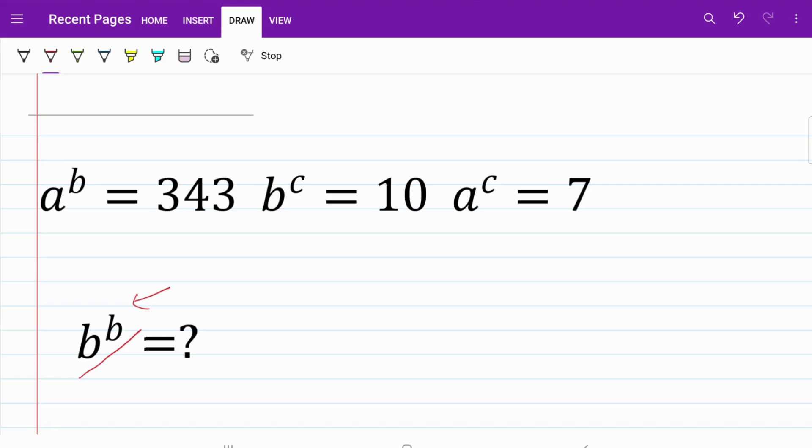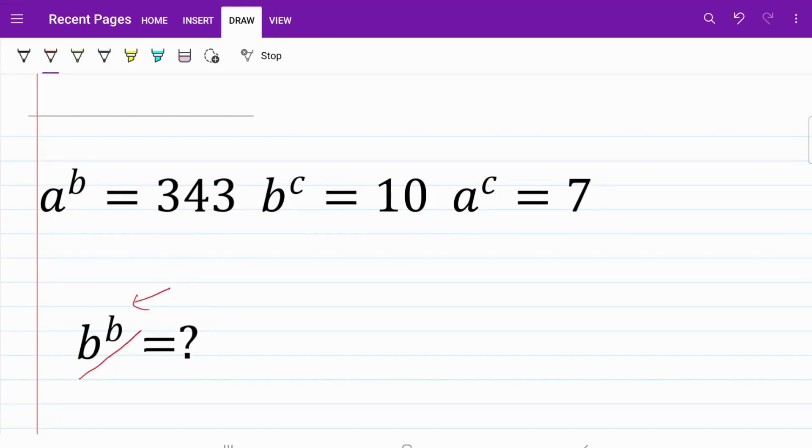In any event, let's go ahead and get started. The first thing that we're going to do is to take a look at 343, 10 and 7 and to find a way to link these numbers together and I hope it should become immediately clear that 343 and 7 are related.